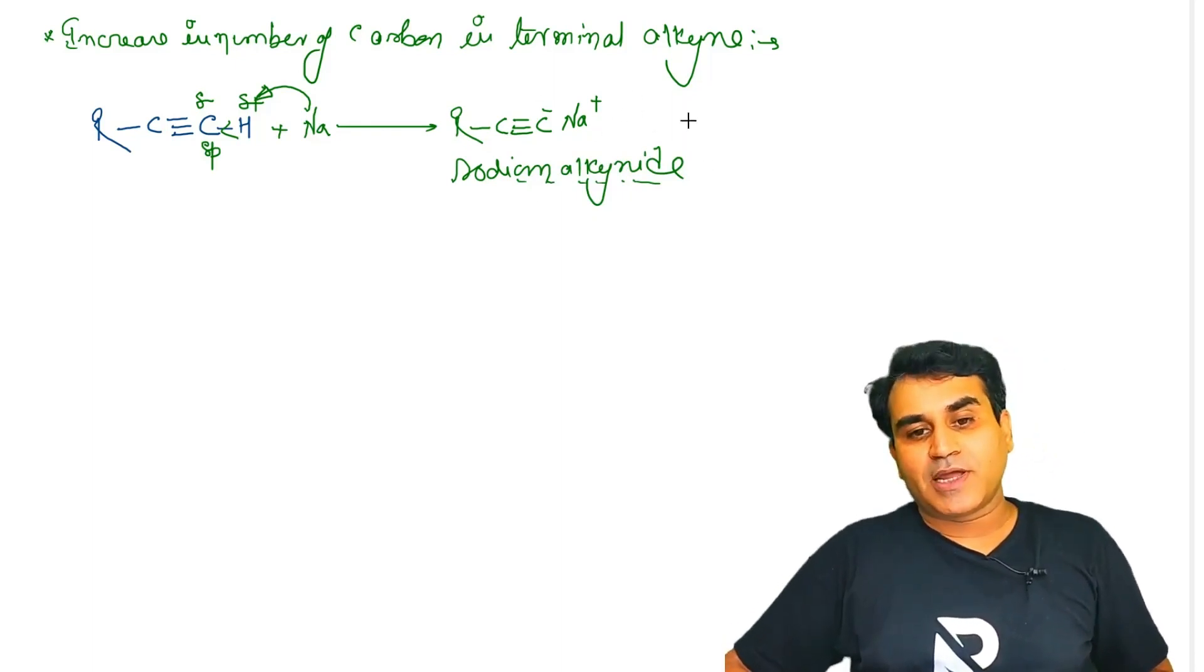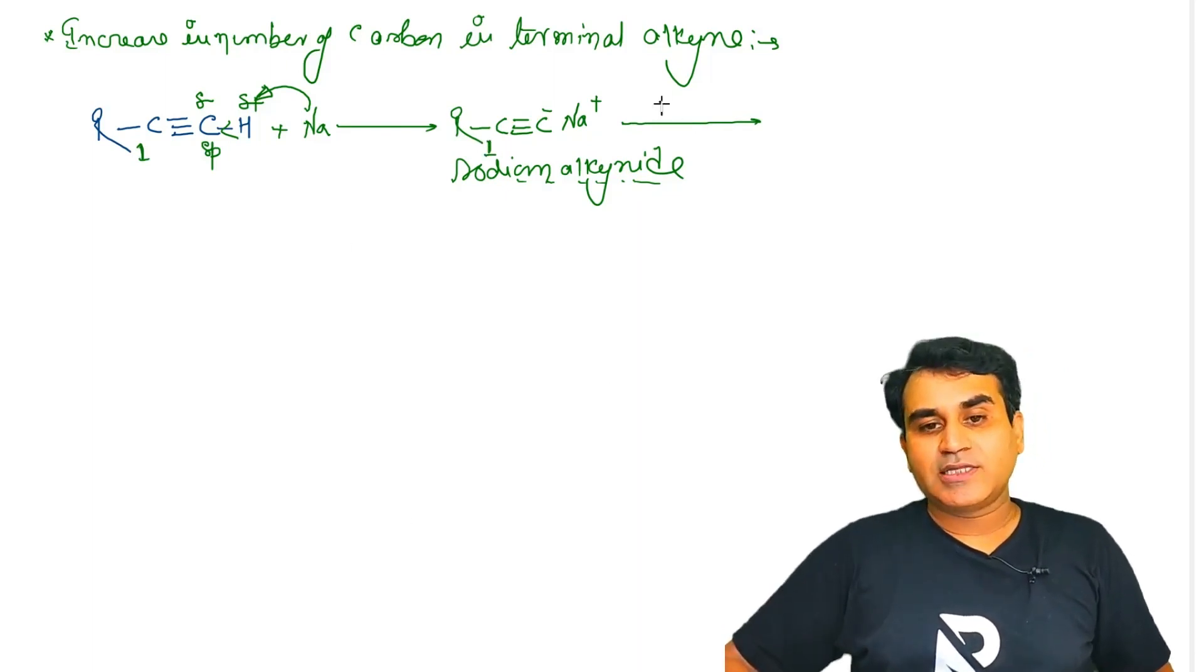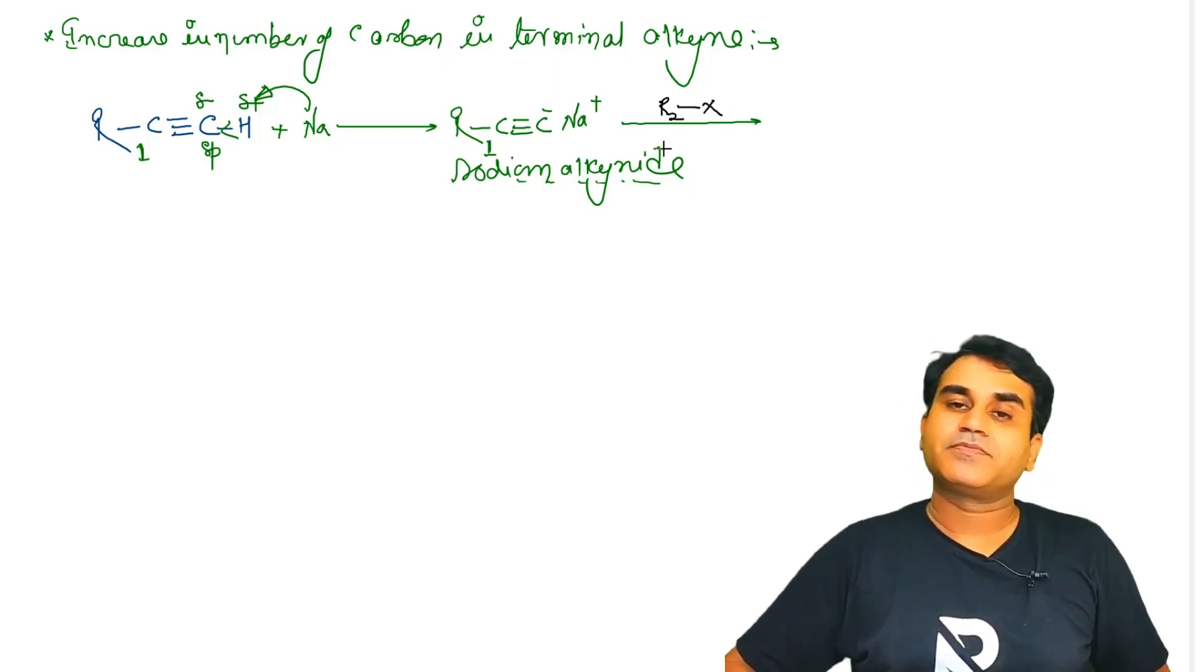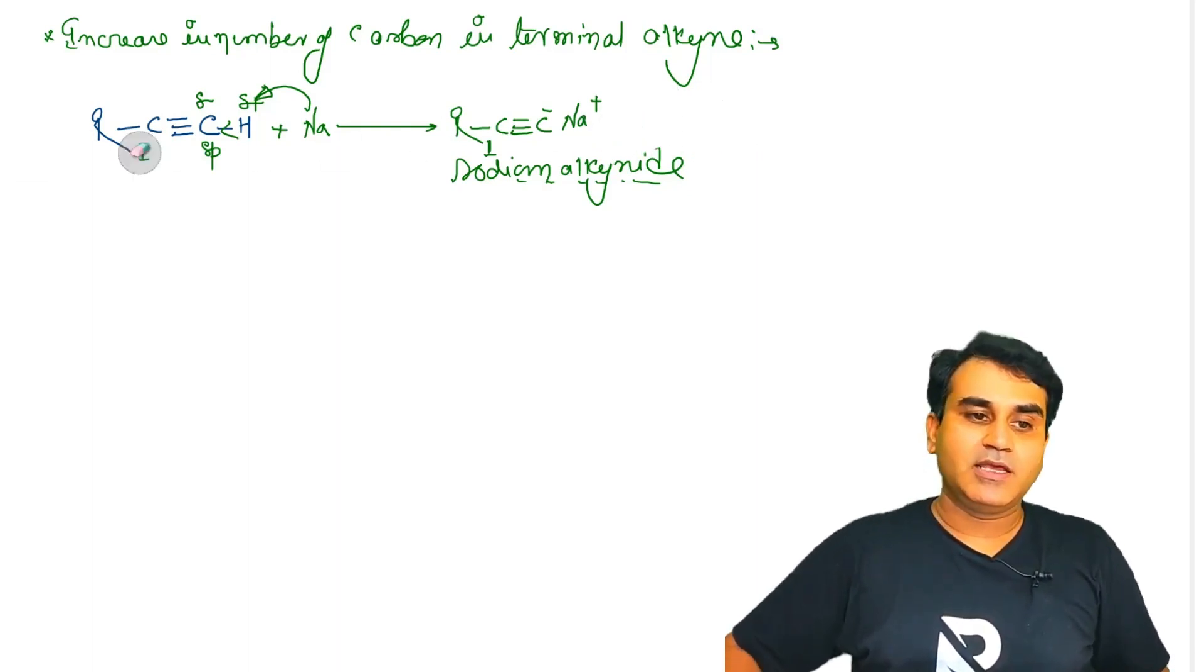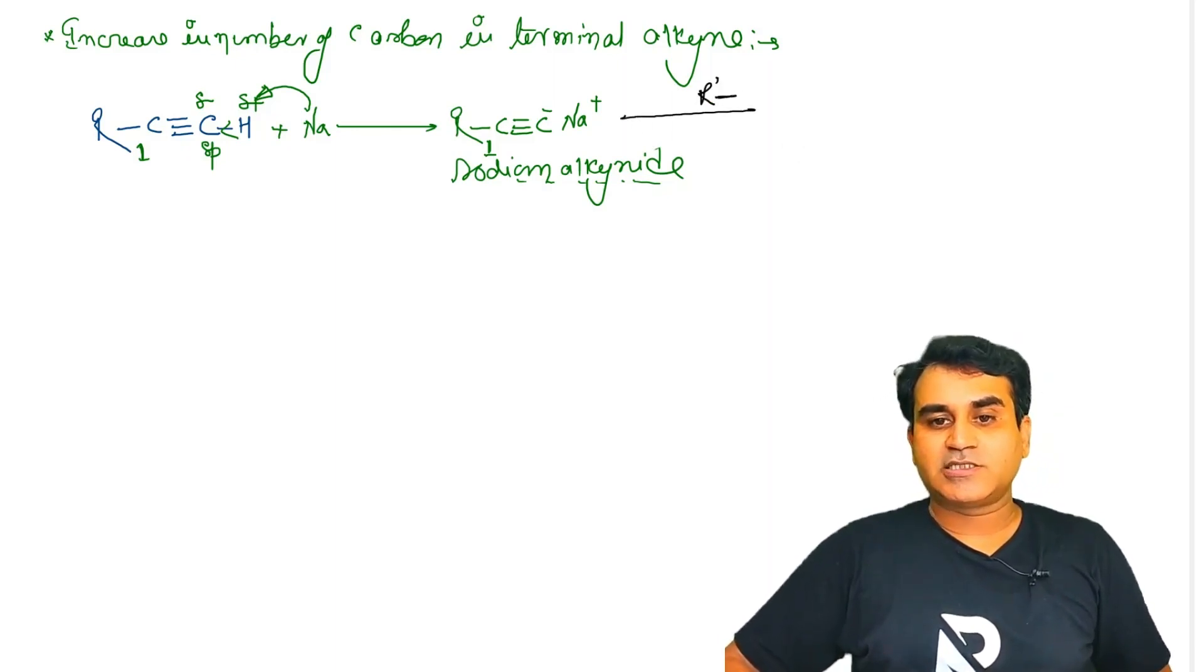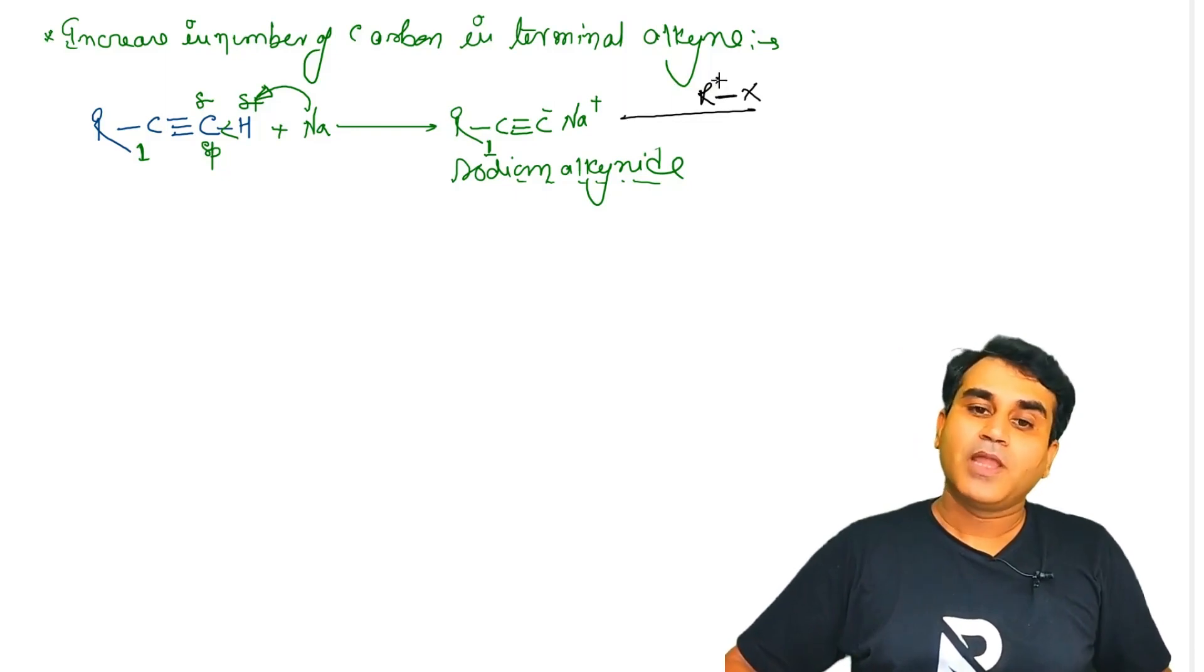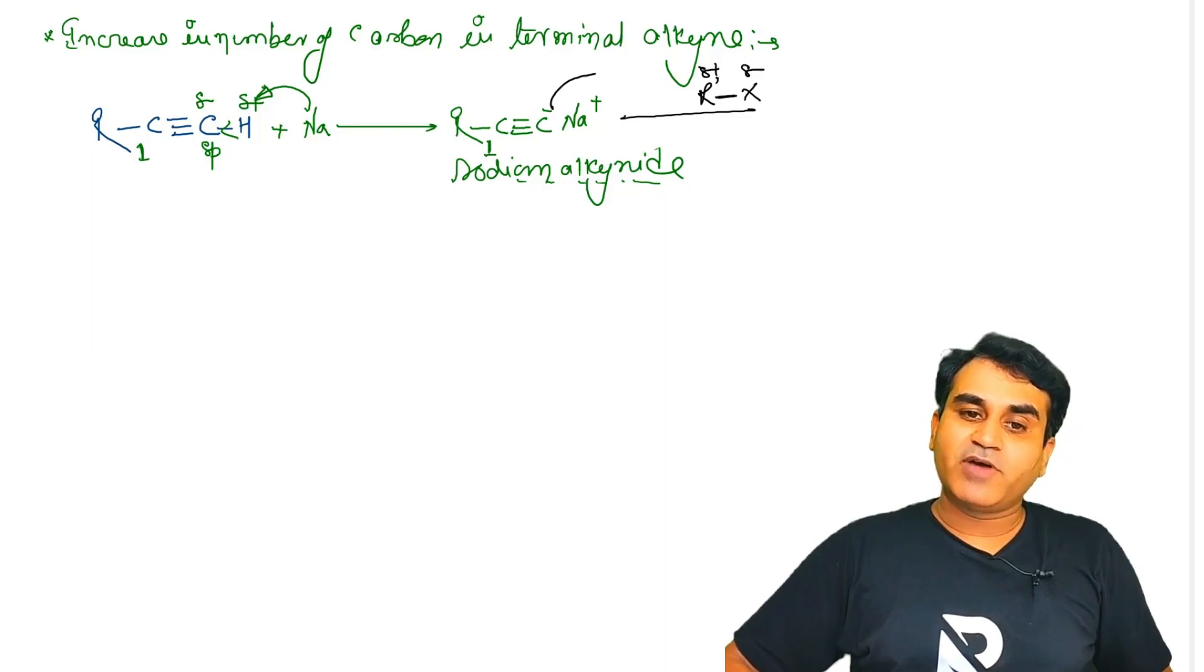Sodium alkyneide se R'X - don't get confused, 2 is not the number of alkynes. Basically we are saying R' dash X. So here partial positive and here partial negative. This negative carbon will attack here.